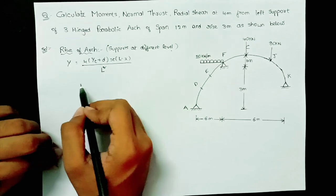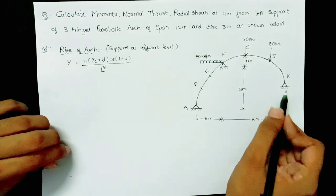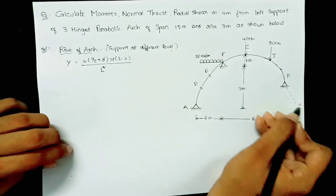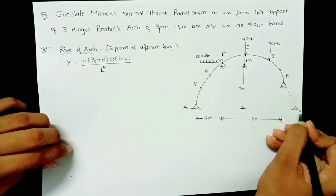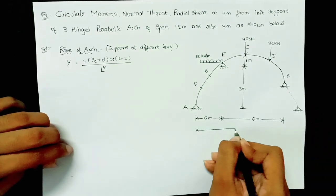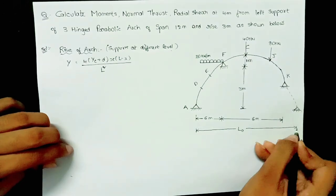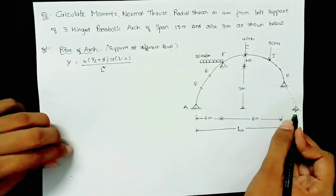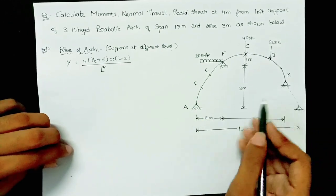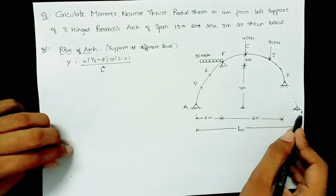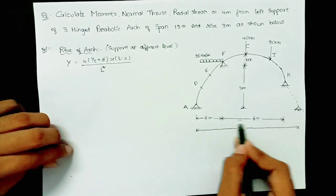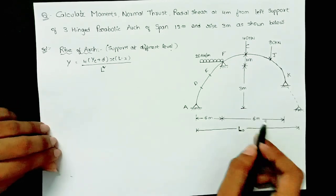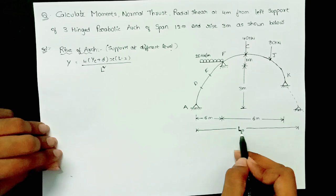Before starting the calculation, we assume that the supports are at the same level. If the supports were at the same level, the total span would be L₀ — the distance from support A to this imaginary support at the same level. This assumed span L₀ will be somewhat larger than the actual span of 12 meters.